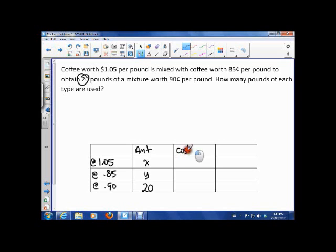The cost per pound, or rate, is, we already know that. That's $1.05. This one is $0.85. And, this one is $0.9. And, so, our total cost is, so the total cost of this amount of coffee is going to be 1.05X. Total cost of this amount of coffee is 0.85Y. And, the total cost of this amount of coffee is going to be 0.9 times 20.